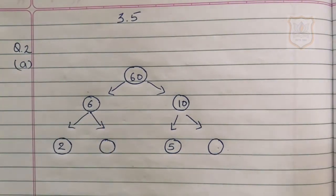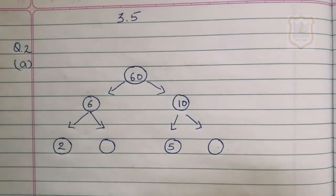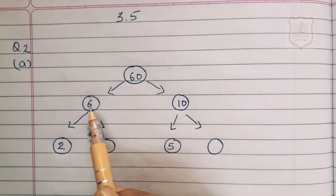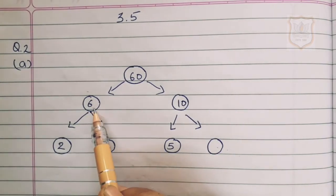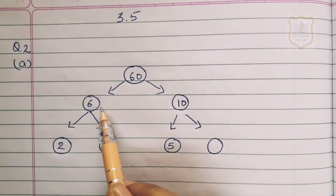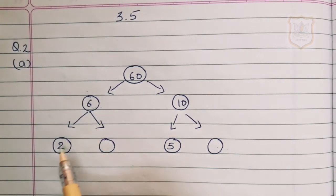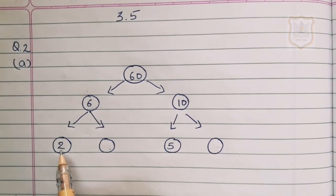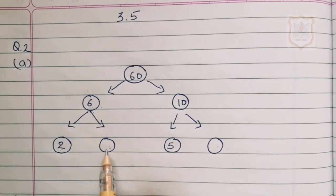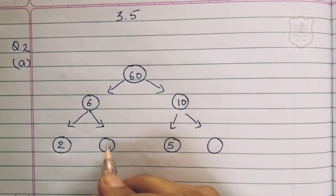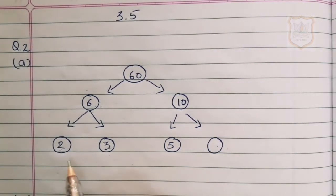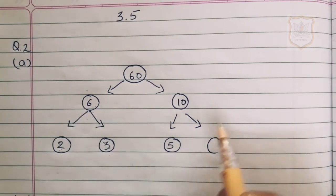We need to split 6, which is a composite number. Since 2 multiplied by 3 gives 6, we write 3 in the blank circle. So the branch from 6 gives us 2 and 3.